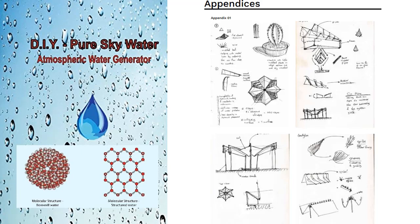To create water from moist air, the hot and humid air needs to be cooled below the dew point. This cooling process reduces the kinetic energy of water vapor molecules, increasing the likelihood of condensation and the formation of liquid water droplets.